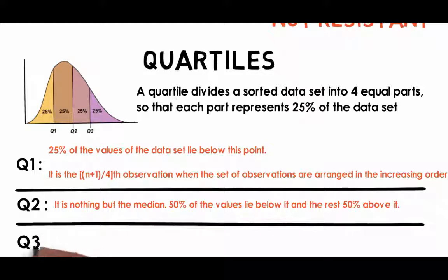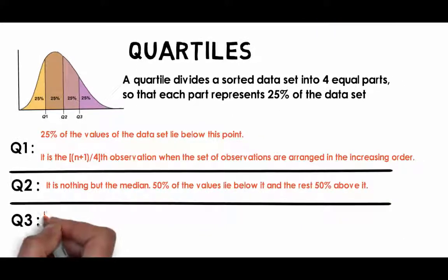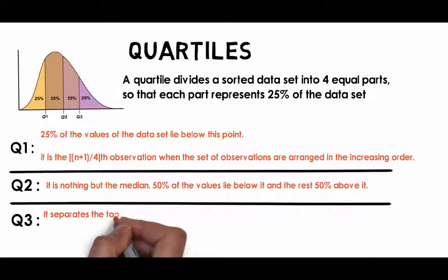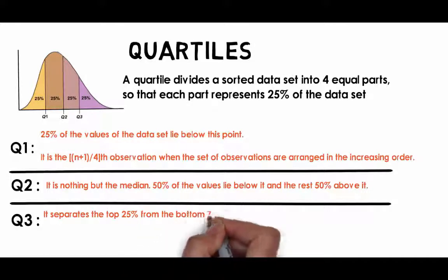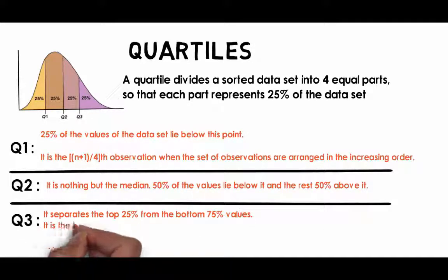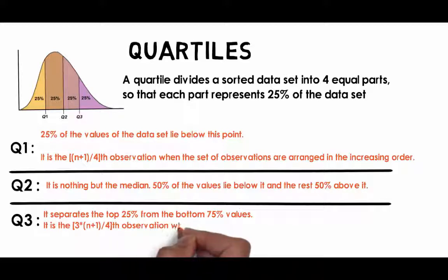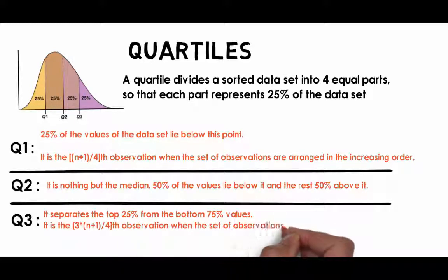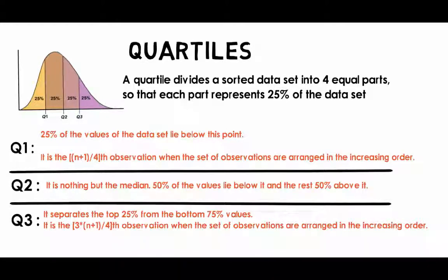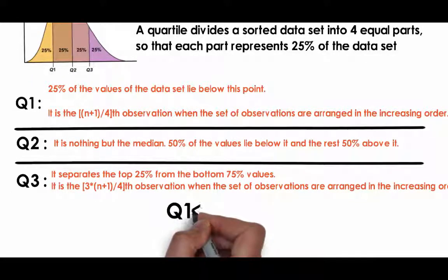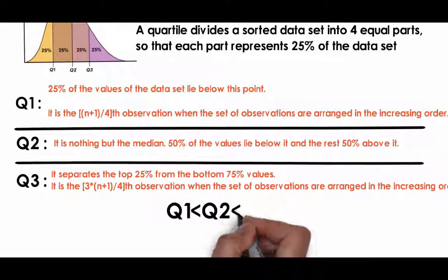Q3, which is the third quartile, separates the top 25% from the bottom 75% values. It is calculated as the value of 3 by 4 into n plus 1th observation when the data set is arranged in the increasing order. Q1 is always less than Q2, which is always less than Q3.